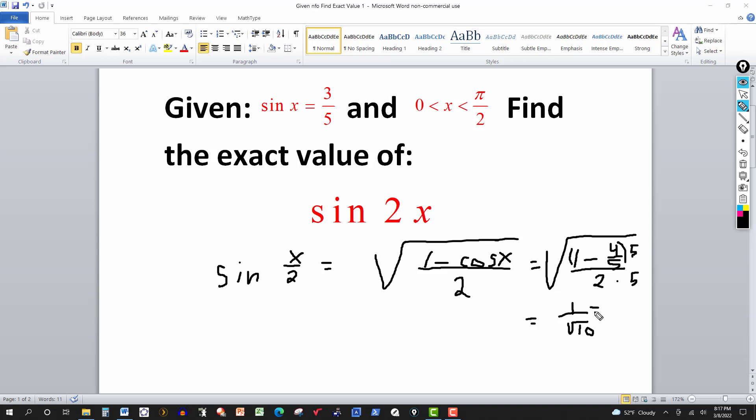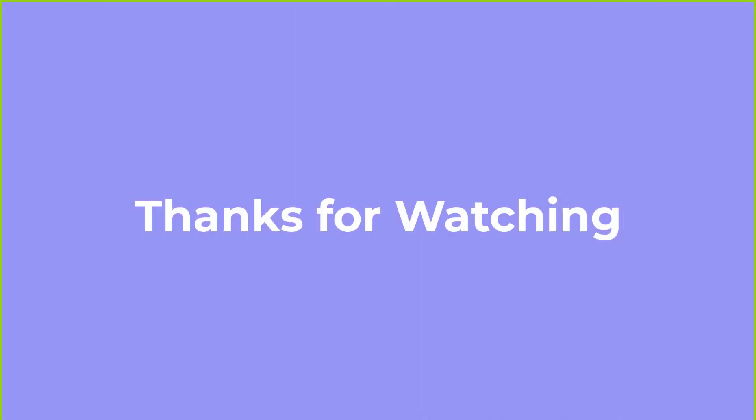And then to rationalize this, multiply both the top and the bottom by the square root of 10. I'll get the square root of 10 up here in the numerator, and the denominator would be the square root of 100. Radical 10 times radical 10, which is 10. So under these given conditions, then the sine of x over 2 is radical 10 over 10. Thanks for watching, we'll see you next time. Thank you.